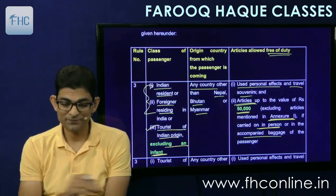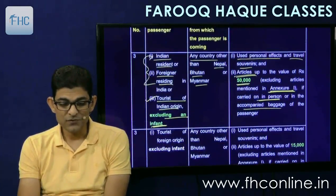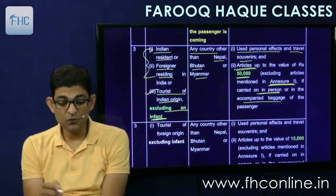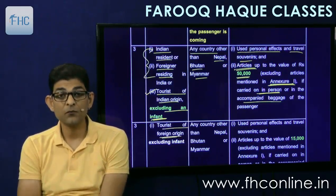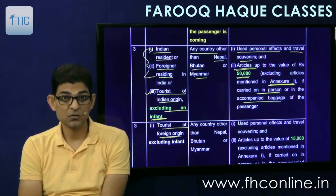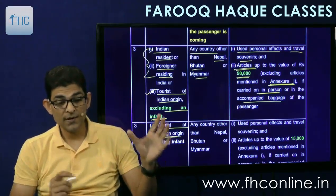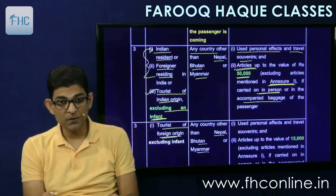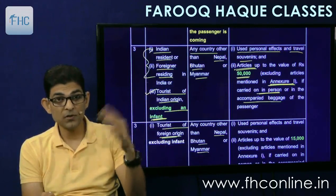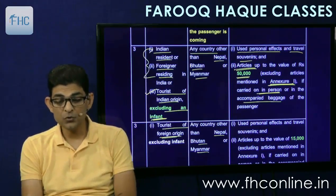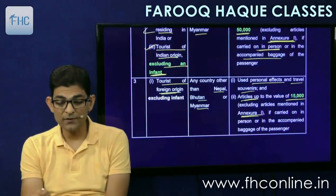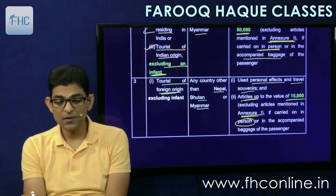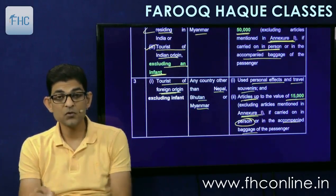The second category is tourists of foreign origin, excluding infants — all foreigners coming to India as tourists, from any country other than Nepal, Bhutan, or Myanmar, such as US or Brazilian tourists. They are entitled to used personal effects and travel souvenirs fully exempt, and articles up to 15,000 rupees only, other than Annexure 1, if carried on the person or in accompanied baggage.